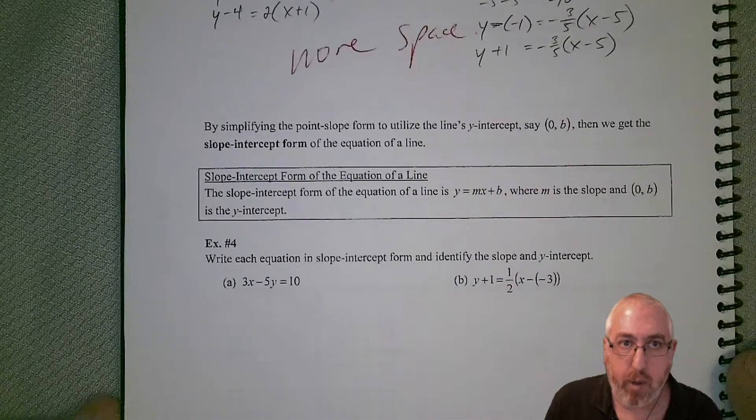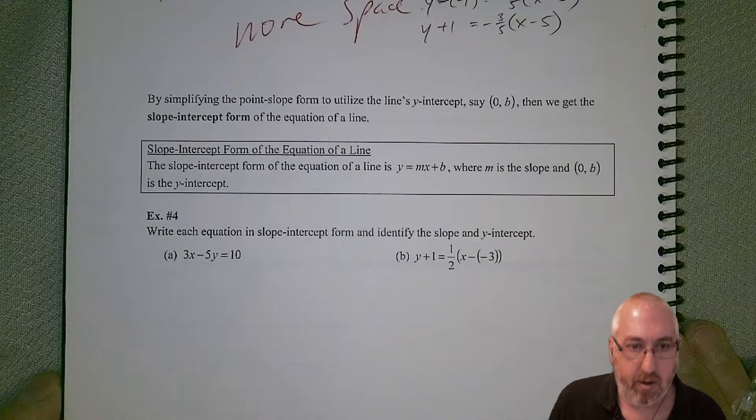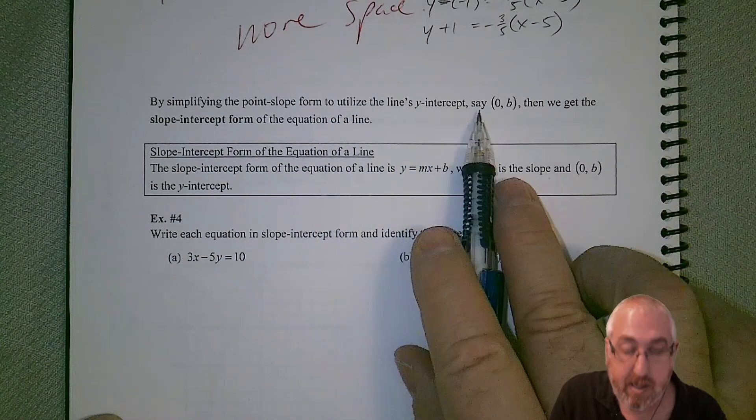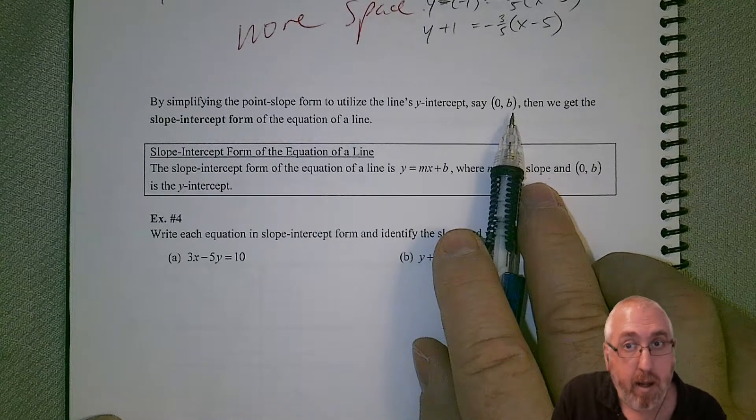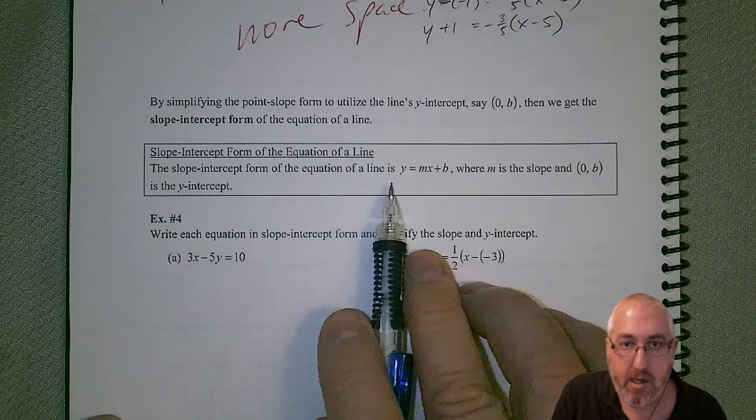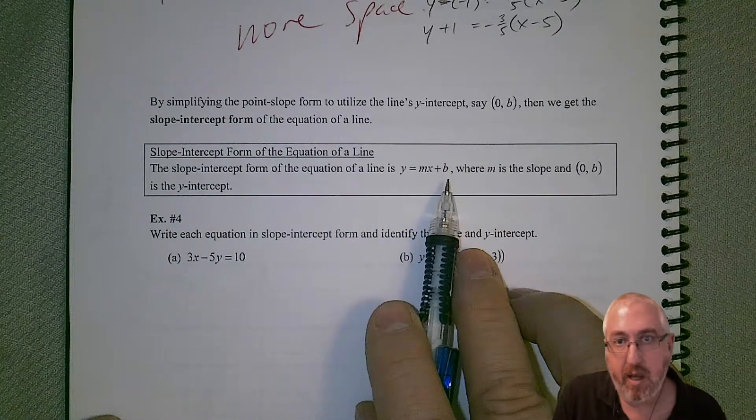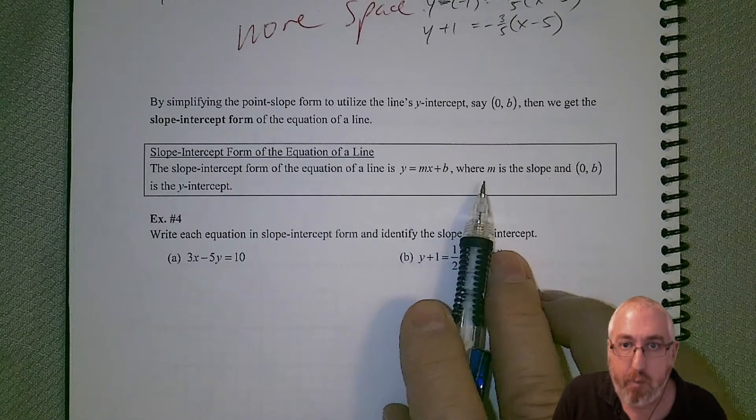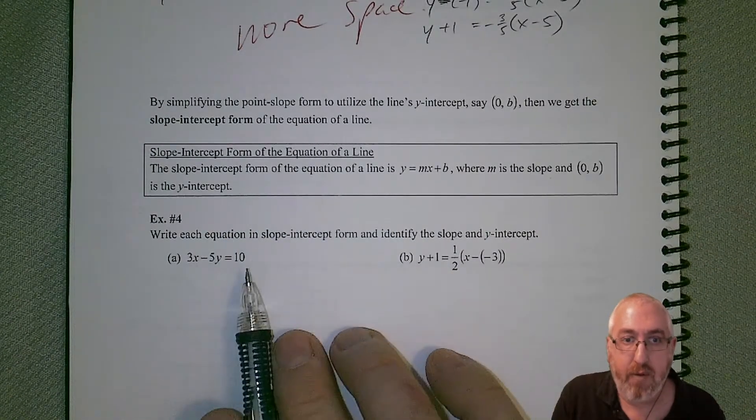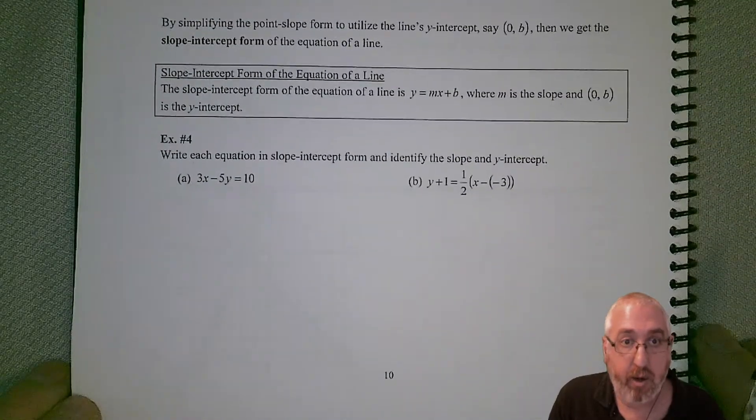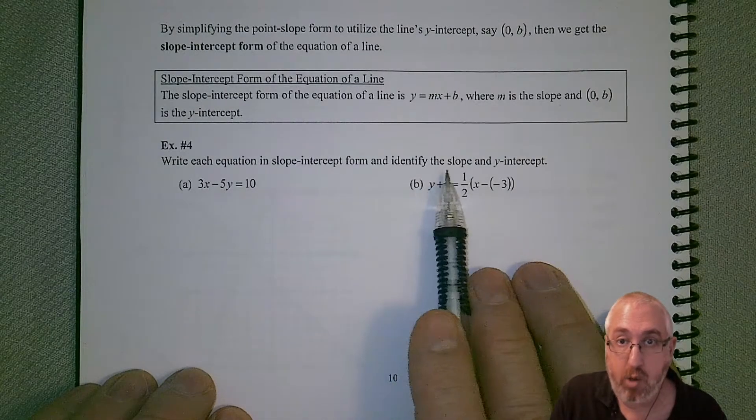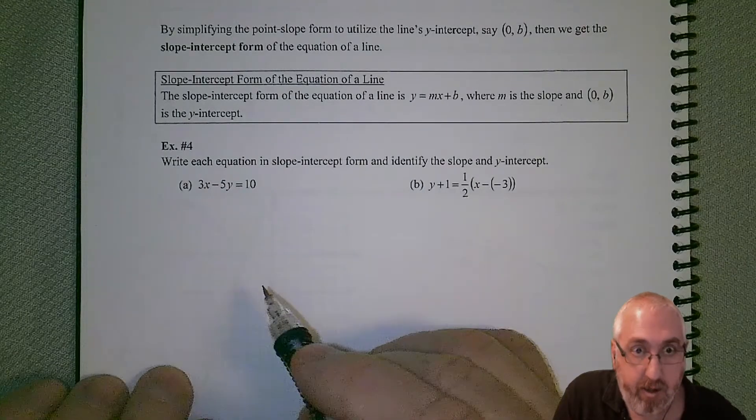Let's take a look at the next way we can write equations of lines. Center this back up again. By simplifying the point slope form to utilize the line's y-intercept, let's say (0, b), then we get the slope intercept form of the equation of a line. The slope intercept form is much more compact: y equals mx plus b. Hopefully that rings a bell for you. m will be the slope and (0, b) is the y-intercept. If you have something like an equation in standard form, and you wanted to put it in slope-intercept form, you could get the slope and y-intercept directly from that. Let's see how to do that.